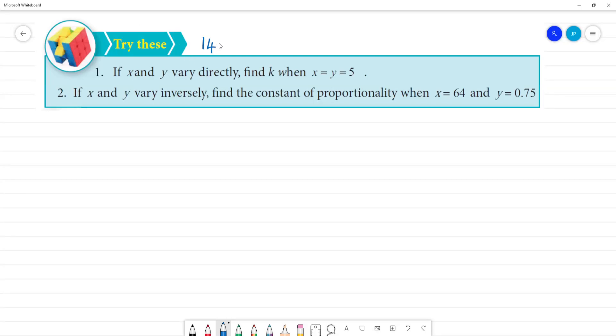This page number is 145. If you have a question, if x and y vary directly, find k when x is equal to 5 and y is equal to 5.